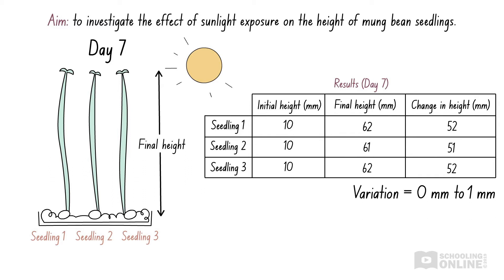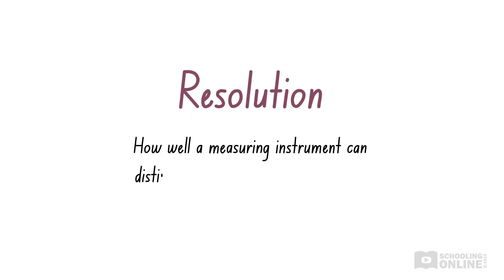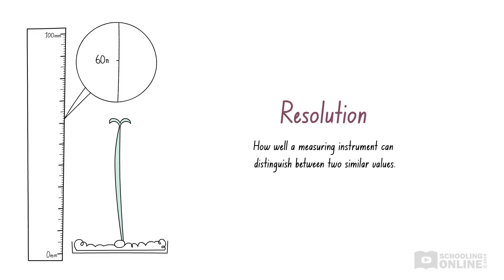Now we can judge the random error in our experimental measurements by comparing them to the resolution of our measuring instrument. The resolution of an instrument refers to how well the instrument can distinguish between two similar values. In this case, the wooden ruler measures length in increments of one millimetre, so it is quite accurate and has a high resolution. If you would like to revise this, please see our earlier video on accuracy in HSC biology skills.